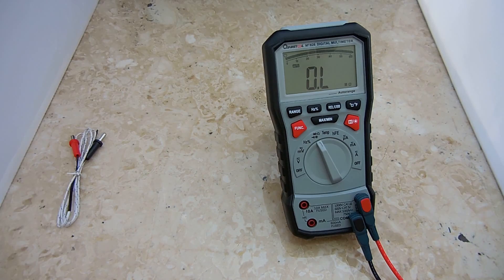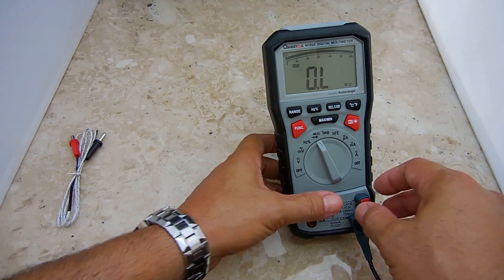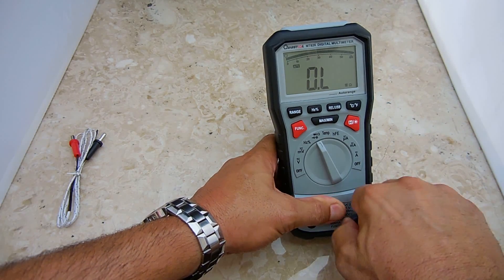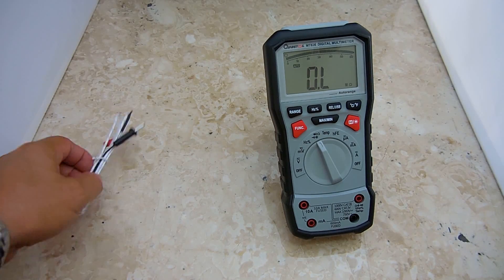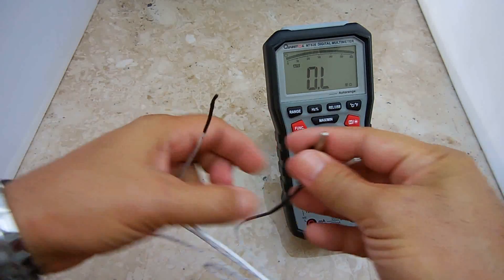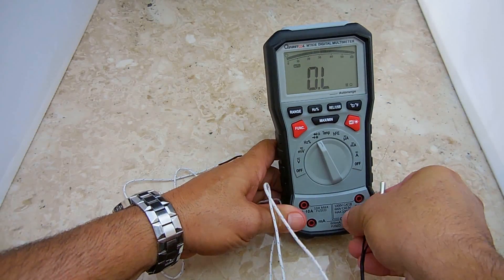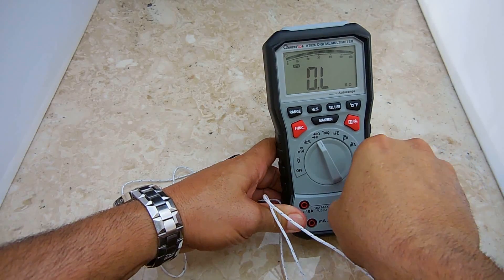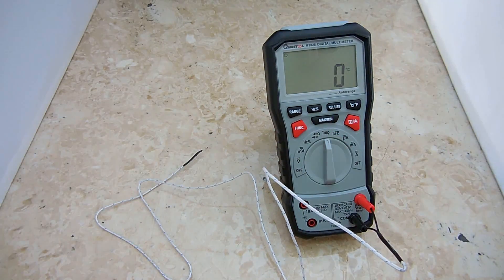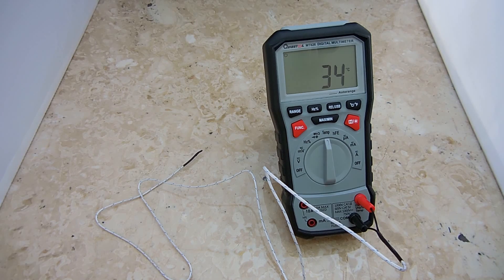The next setting we're going to be looking at is the temperature setting. Let me take these out, plug in the probe. One on the bottom, one on top. And you can see it says 34 degrees Celsius.